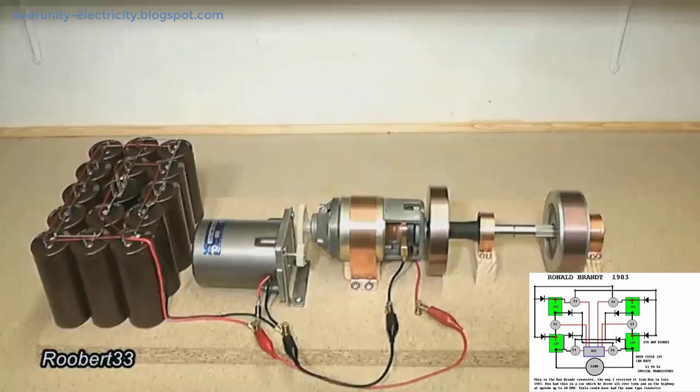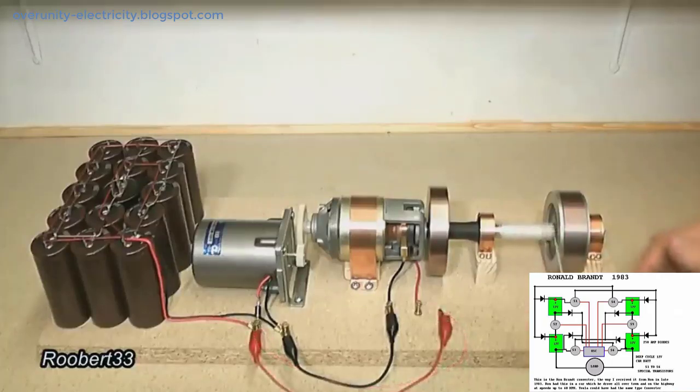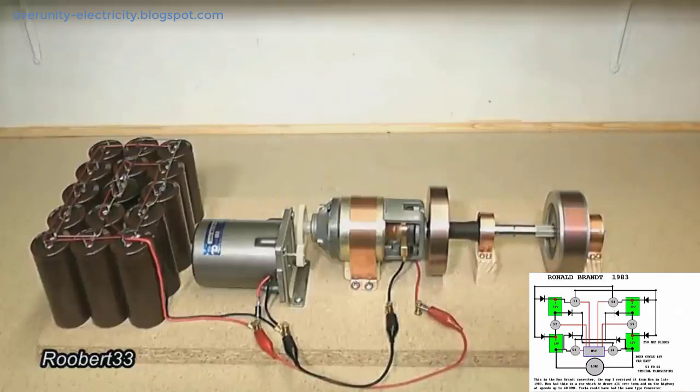Thus, Nikola Tesla's method is to eliminate/inhibit back EMF in the generator, which is also to eliminate the factor that hinders free energy. Additionally, back EMF often found to be harmful in generators is also harnessed to become electricity with Tesla technology.